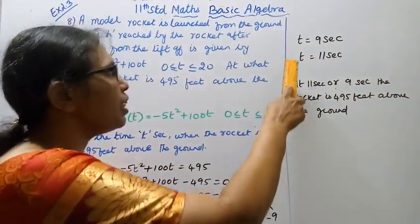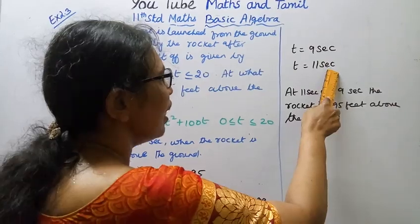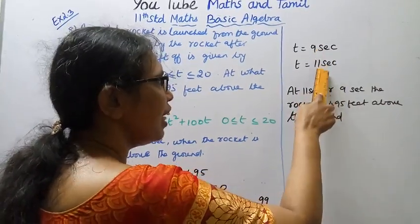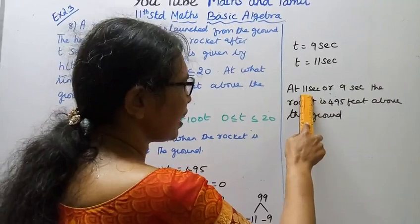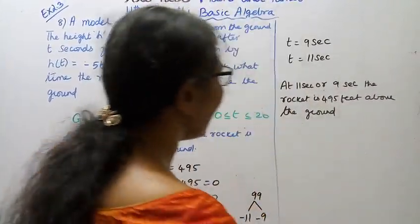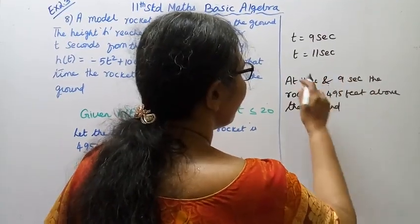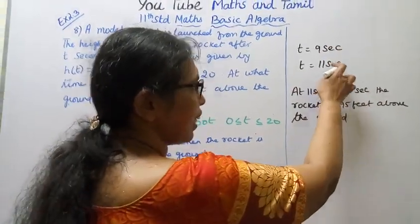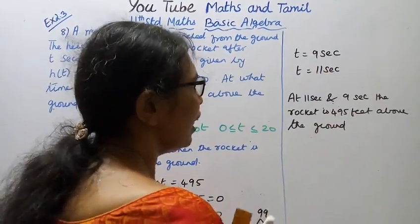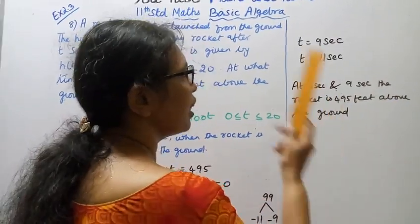Therefore, t = 9 seconds or t = 11 seconds. At 11 seconds or 9 seconds - both 11 seconds and 9 seconds - the rocket is 495 feet above the ground.